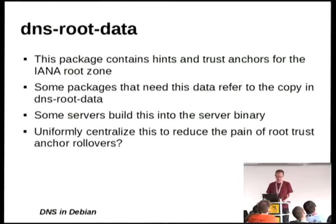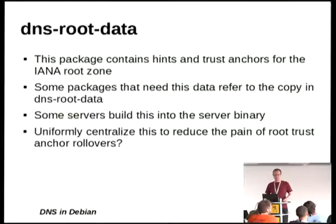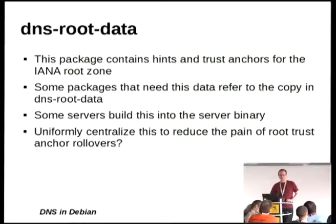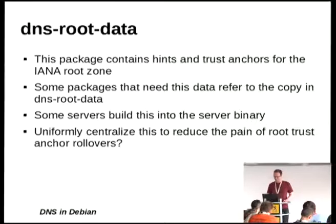In Debian we also have a package called dns-root-data. It's basically a data package — very roughly like the ca-certificates package. It has copies of parameters called the root zone hints and the root trust anchor, that control where the resolver starts. Some of this stuff gets hard-coded into various DNS servers and software. If we add even more DNSSEC libraries, we might want to centralize this to reduce the pain of these rollovers.